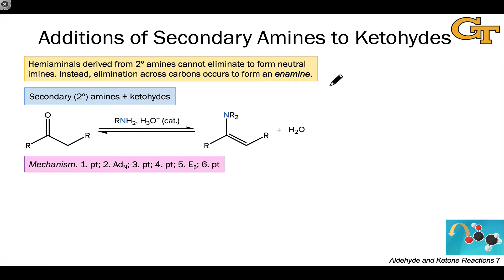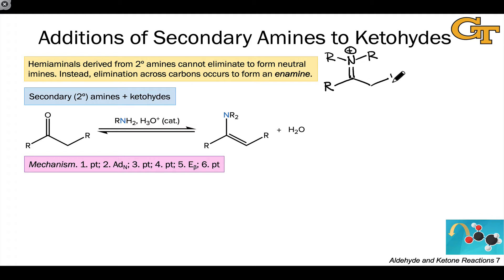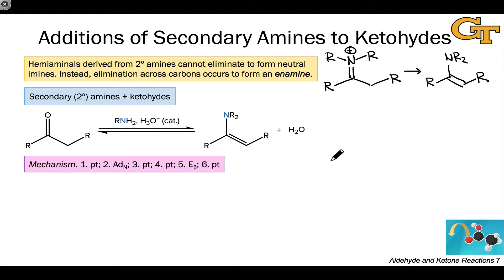When we treat a ketone or aldehyde with a secondary amine, we can't do beta elimination to establish a C-N bond in which the nitrogen is neutral. The best we can do, because that nitrogen bears two R groups, two carbon groups, is generate a positively charged iminium ion. This can occur in the reaction conditions, but upon aqueous workup with acid or base, it will isomerize spontaneously to form the corresponding enamine. This is the product we observe when we treat a ketone or aldehyde with a secondary amine.